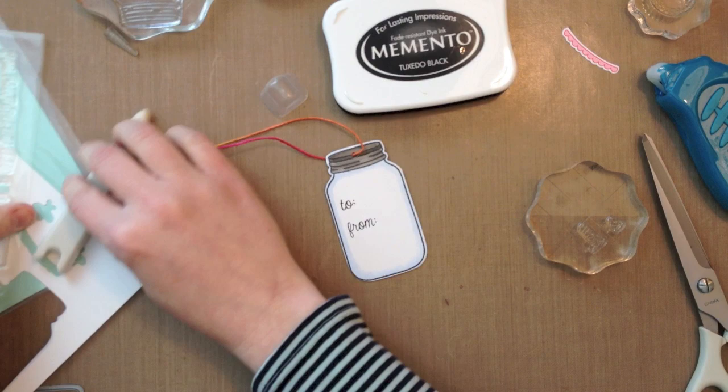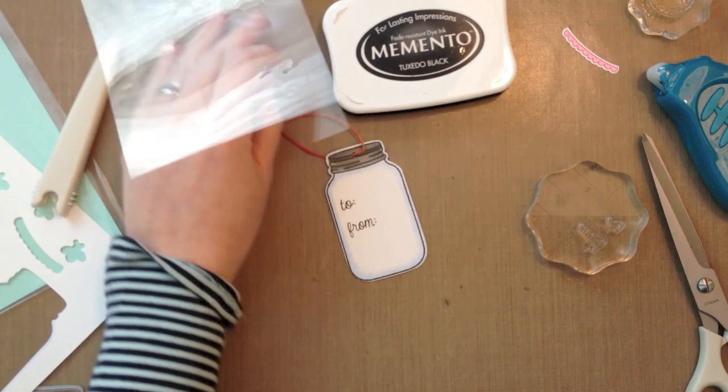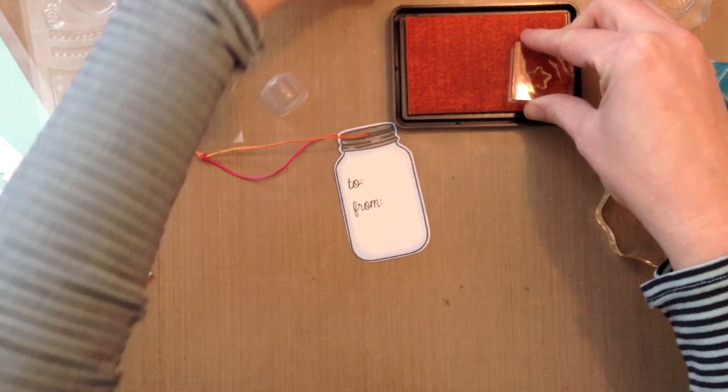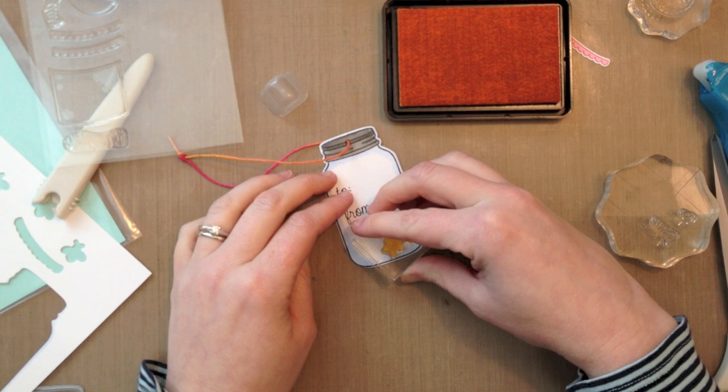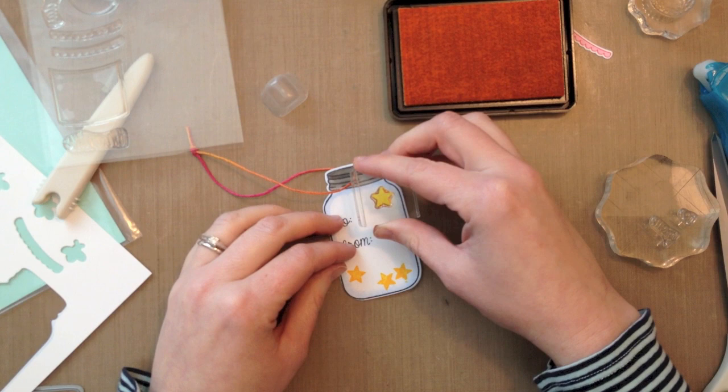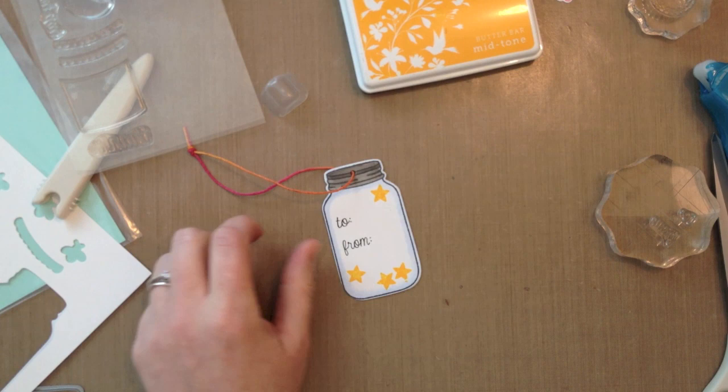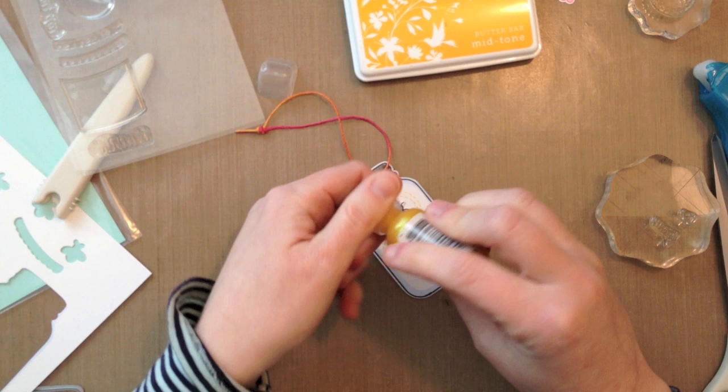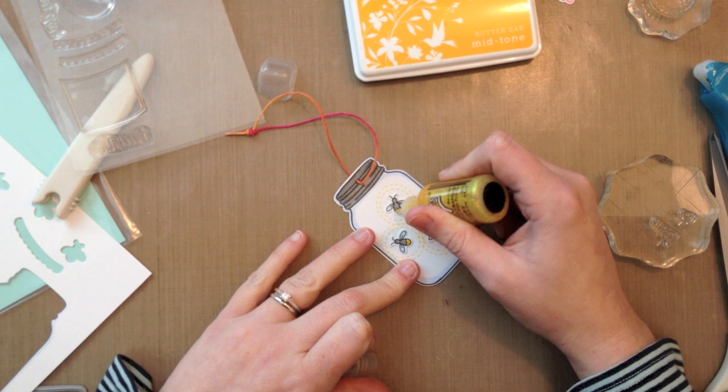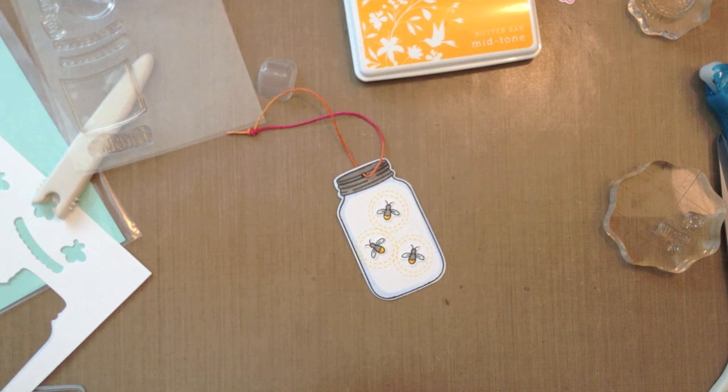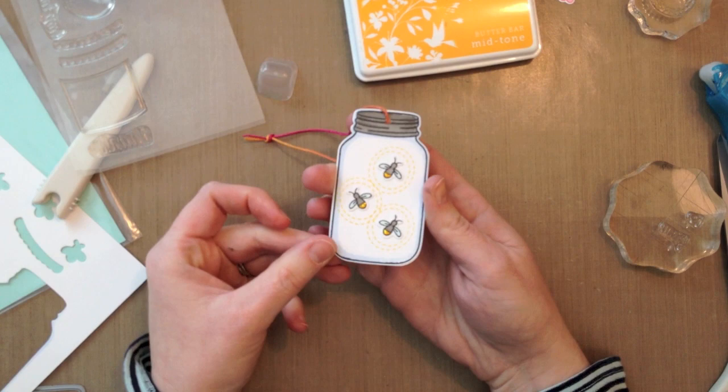So I've decided I wanted to embellish the back a little bit more. So I'm going to use the solid star from the stamp set. I like that this set has a solid and an outline star as well as a solid and outline heart. So I'm going to use that solid star and that Butter Bar yellow ink again. And I'm just going to stamp out some stars on the back of the jar just to decorate the back a little bit more. And then I have some yellow Stickles and I'm just going to put a tiny little bit just on the glowing rumps of the fireflies here just for a little extra embellishment.